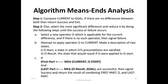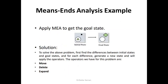Here is a simple example for means-end analysis. An image is given that consists of several objects: a dot, a circle, and a diamond. This is your initial state. The goal state has one circle and one diamond. The operators allowed are: move an object, delete an object, or expand an object. Each time from the initial state, we compare to the goal state and apply one of these operations to move closer to it.